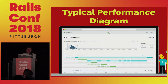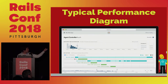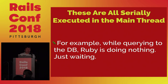Here's a diagram showing actual application performance — downloaded from Skylight's website. This diagram shows that it executes queries in serial order: the first query, the second query, the next query. This means these are actually serially executed in the main thread.